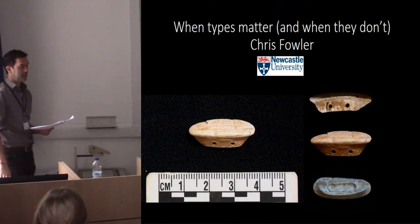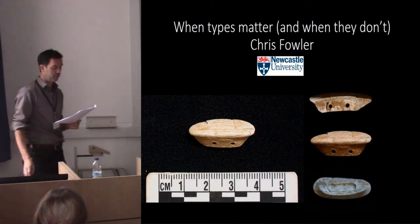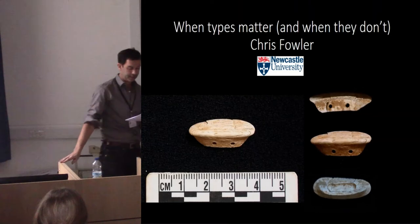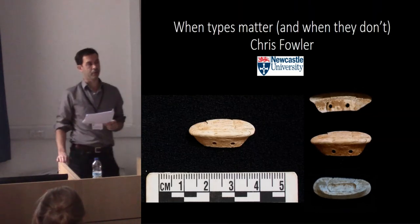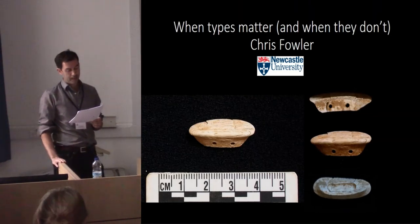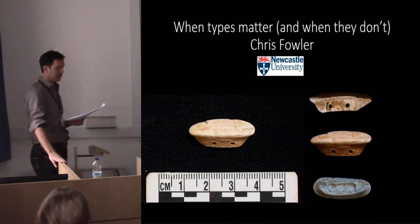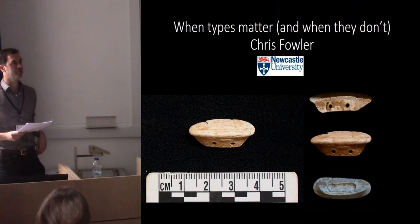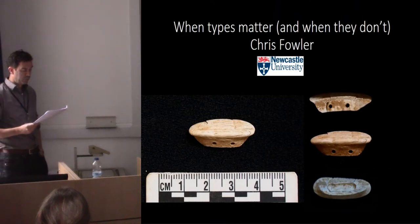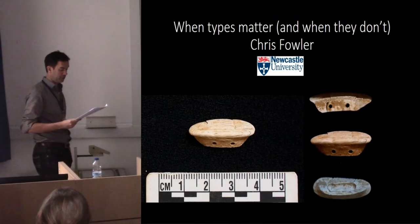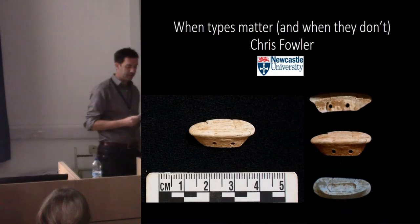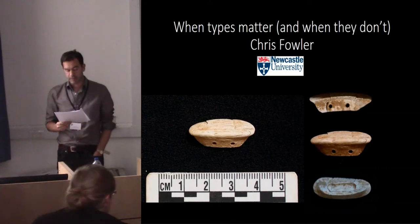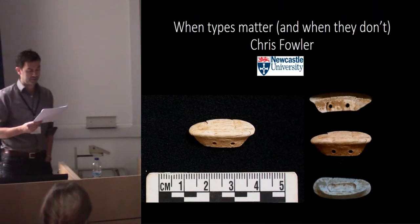Typology has been described as tyrannical, reducing or erasing differences between objects, making the subjective seem objective, the tentative certain, the complex simple. In relational theory, particularly Deleuzean approaches stressing the specificity of things, it's been argued we should reject typology. The problem with traditional understanding of typology is that it posits an essential form carried as a mental template which is then created pretty faithfully in each instance of that type.